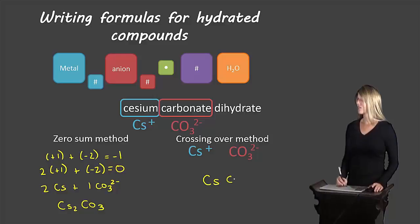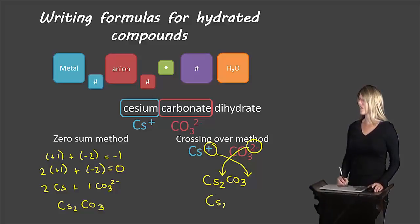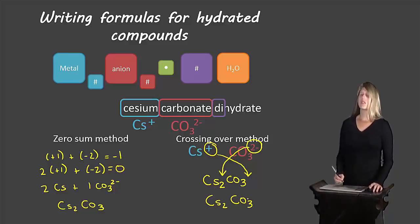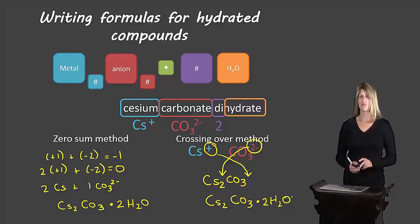Now we can find the same answer using crossing over. If we write our Cs and our CO3 beside each other, take the charge on the cesium, write it as a subscript for carbonate. We don't write subscript 1 so we leave it blank. The charge on the carbonate as the subscript for cesium. So we end up with Cs2CO3. Then we look at the prefix. We see that it's di which is 2 so we write dot 2 for each of them and then the word hydrate tells us we need to write H2O. That's how we would solve this type of problem.